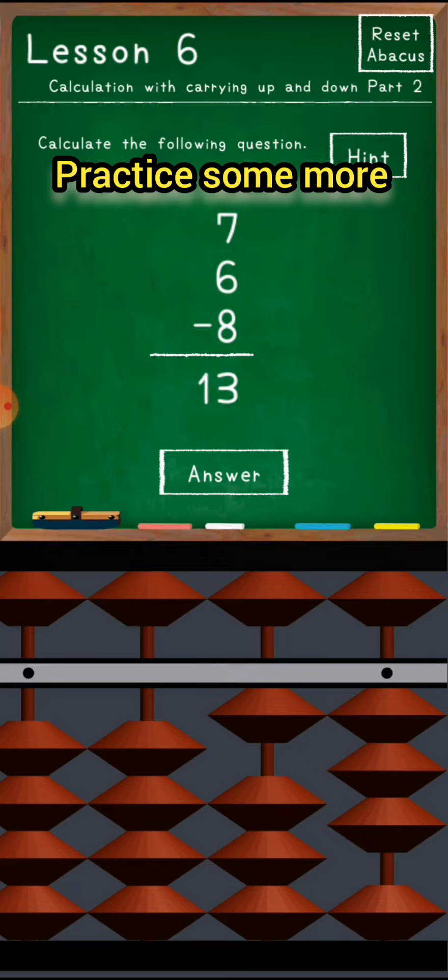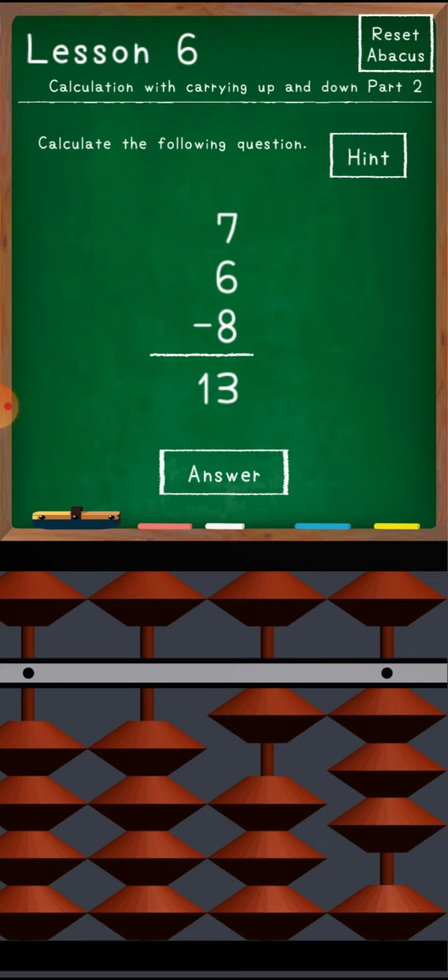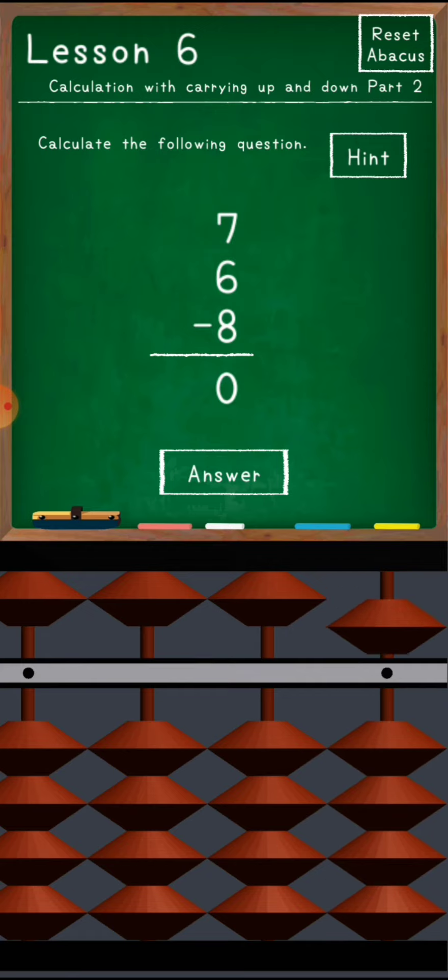In the big friend formula, 10 is there. So minus 10, if I am going to do minus 10 plus 2, yes it is possible. Minus 10 plus 2: 1, 2. This is my answer. Next one: 6, 5, 6.